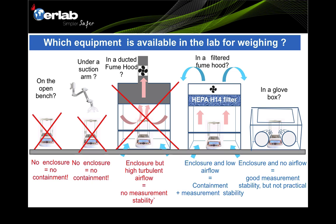Method number five is doing measurements inside a glove box. Definitely there is enclosure and good containment, because there is basically no airflow — it's fully enclosed. It provides a stable environment for measurements because of no airflow, but it is rather impractical because most glove boxes are disposable, very expensive, and not practical for day-to-day weighing applications.